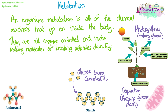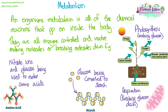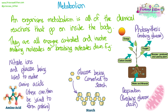Anything where molecules are being made — so small molecules are being converted into large molecules, like glucose being converted into starch — is a metabolic reaction. Also, nitrate ions from the soil in plants are combined with glucose from photosynthesis to make amino acids. Those small molecules can then be joined together to make proteins, so there are lots of steps there that are all metabolic reactions.